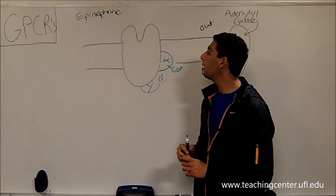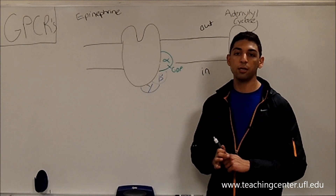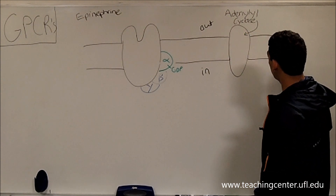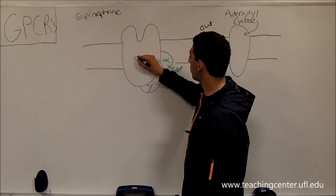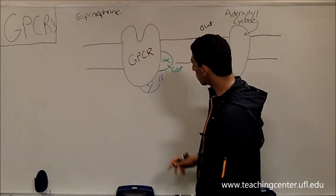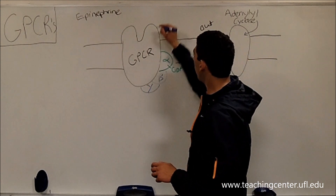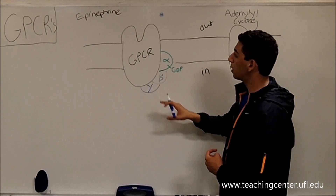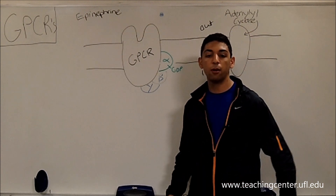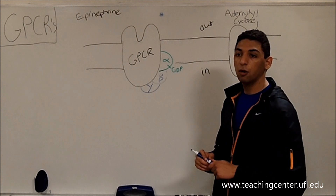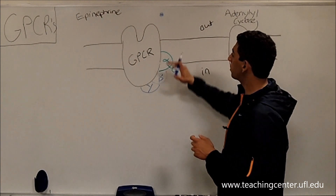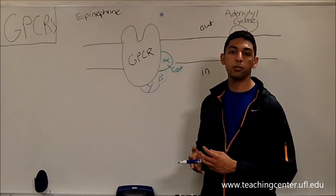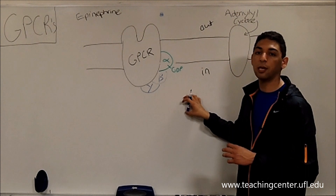G-protein-coupled receptors are an example of signal transduction. This is the basic setup for all G-protein-coupled receptors drawn behind me. This big guy right here is the actual G-protein-coupled receptor. G-proteins encompass a whole family of receptors — they do everything from helping you smell to your fight-or-flight response. For today, we're going to specifically talk about epinephrine, also called adrenaline, which uses G-protein-coupled receptors to mediate the fight-or-flight response.